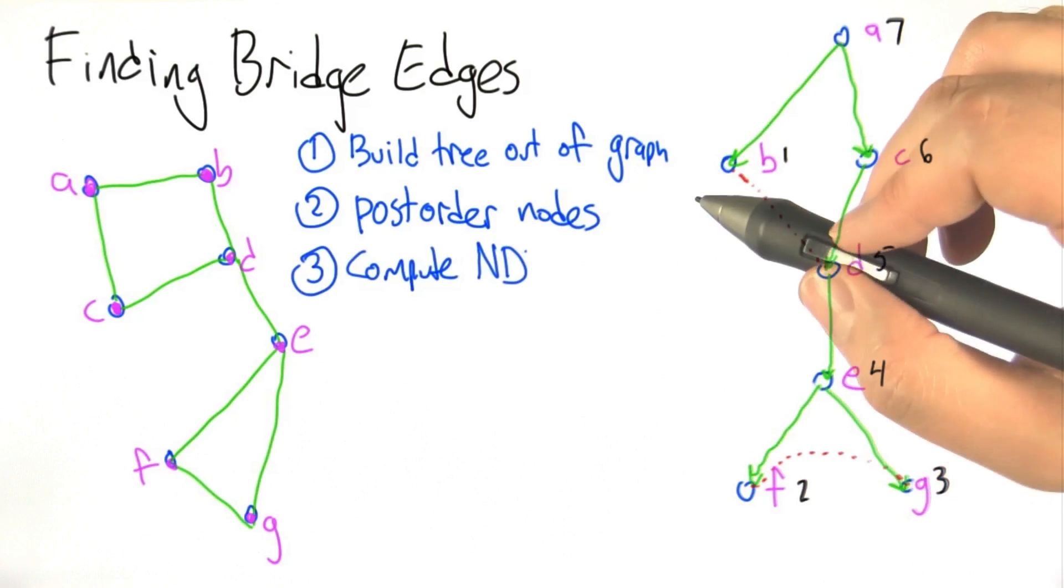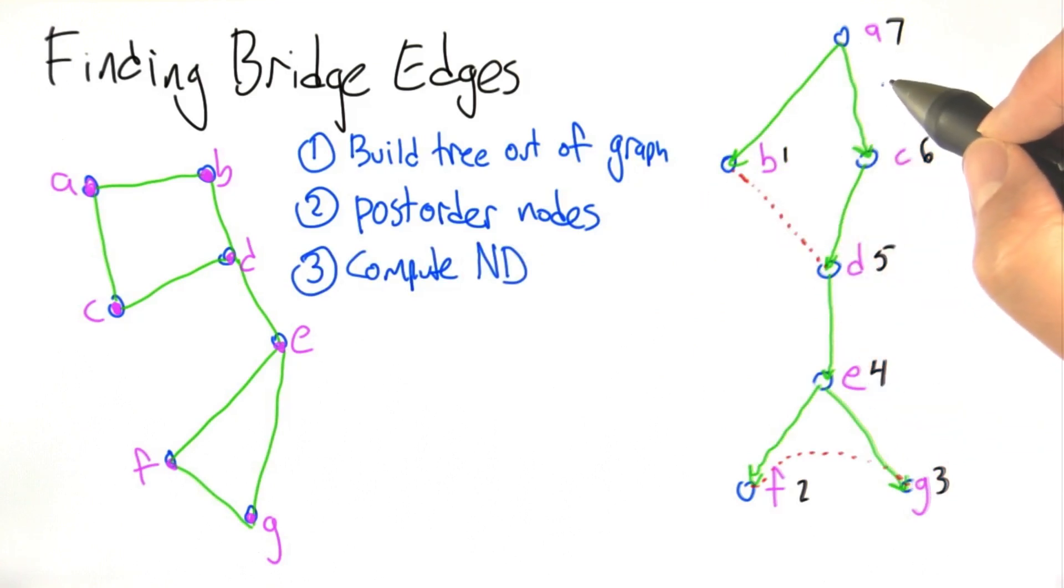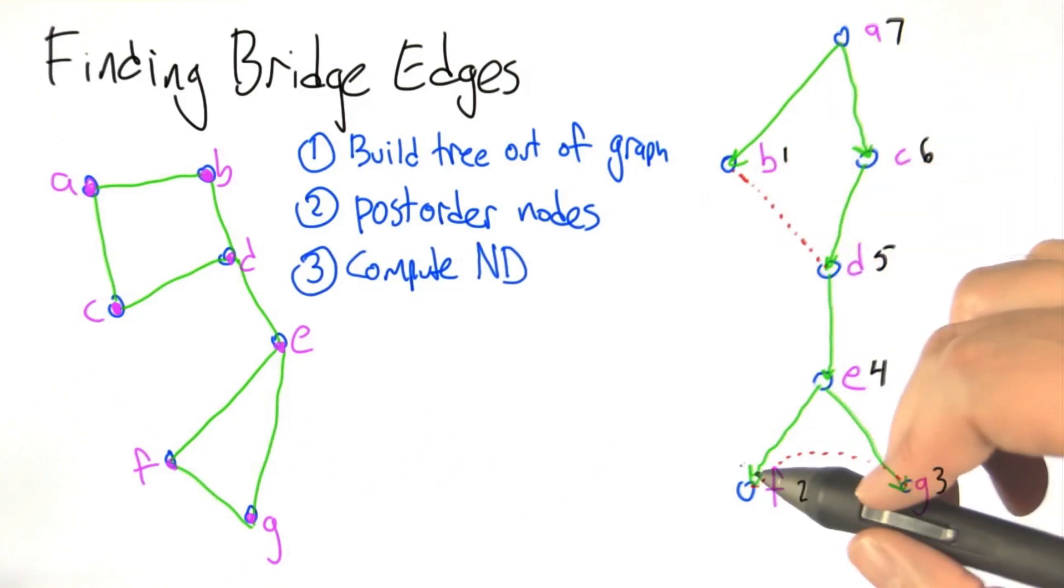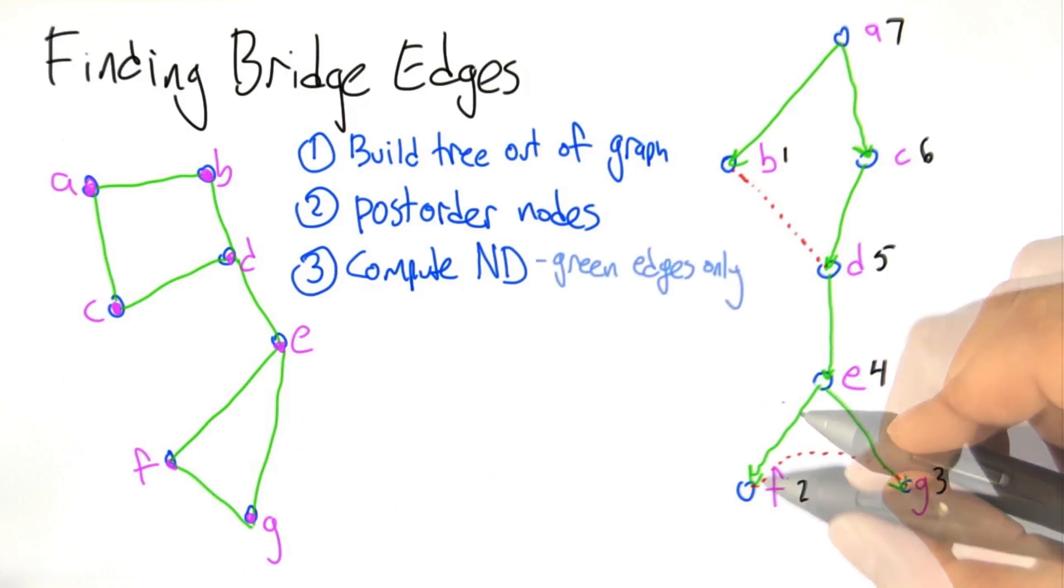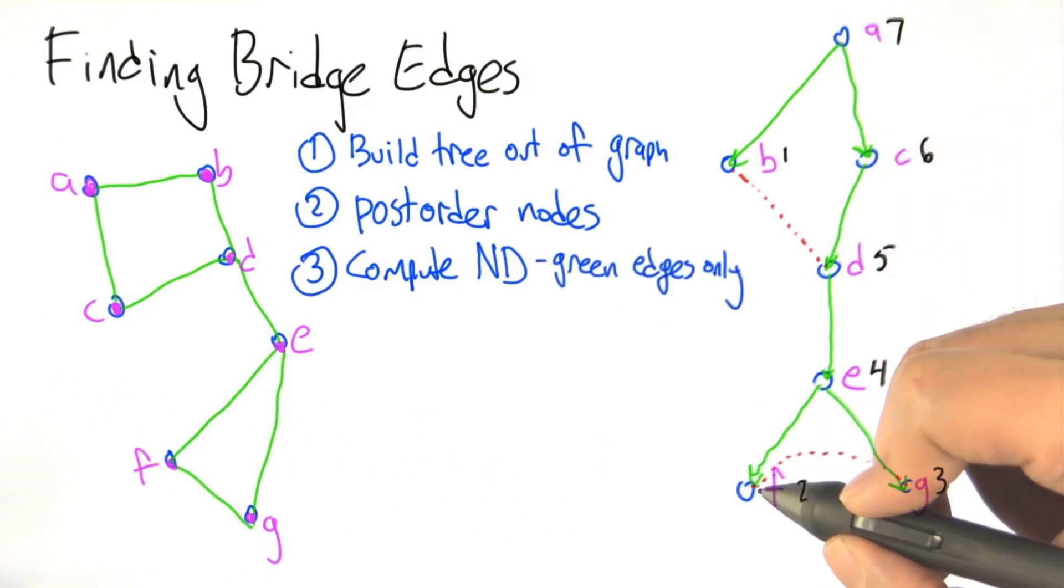We now compute the number of descendants for each node in the graph and the number of descendants is the number of nodes that are either the node or reachable from the node by following green edges only. So it's easiest to start at the bottom here.